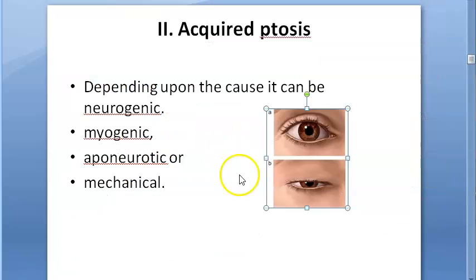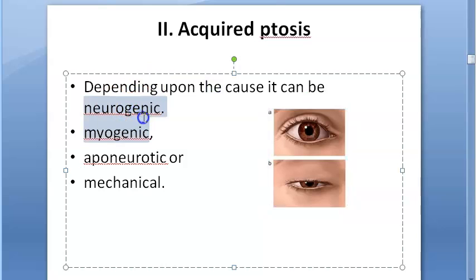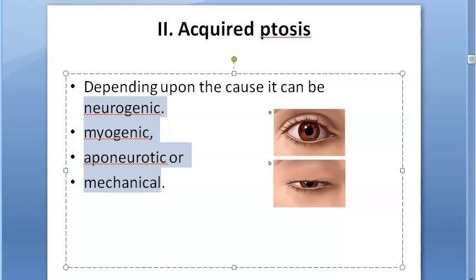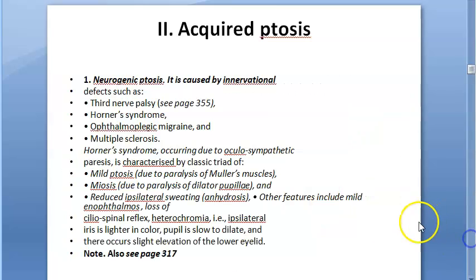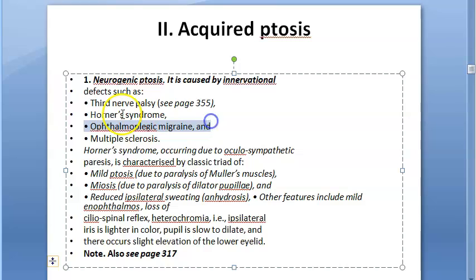Acquired ptosis means the person was fine before and is now not fine. Acquired ptosis can be neurogenic, myogenic, aponeurotic, or mechanical — four causes to remember. Neurogenic causes include third nerve palsy, Horner syndrome, ophthalmoplegic migraine, and multiple sclerosis.